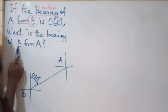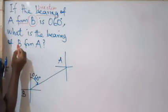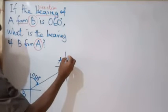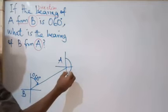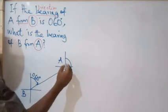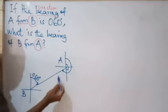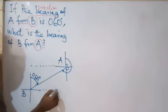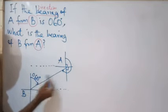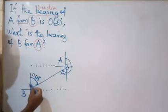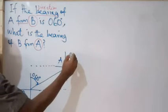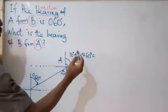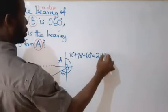The question now says: what is the bearing of B from A? That means if I'm in A and I want to look at B, at what direction would I be looking? So I start from the north again at A and draw until I reach the line joining the two points. This gives me 90 plus another 90. These north lines are parallel, so this angle is alternate to the 60-degree angle. Therefore the bearing of B from A is 90 plus 90 plus 60, which is 180 plus 60 — giving us 240 degrees.